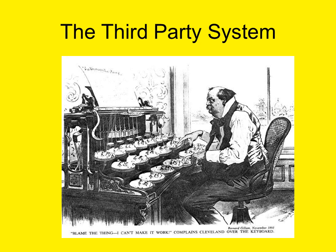In this lecture we will be examining the emergence of what became known as the third party system. The term reflects a form of periodization used by political historians to denote American political history from about 1854 to the mid-1890s. This era is delineated by its differences with the second party system, dominated by the Democratic and Whig parties from roughly 1828 to 1854, and the fourth party system, the Republican-dominated period from 1896 to 1932.